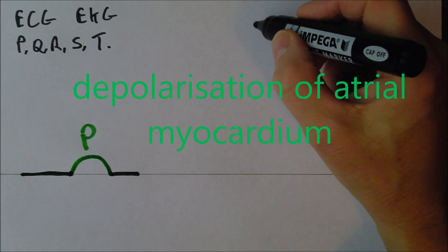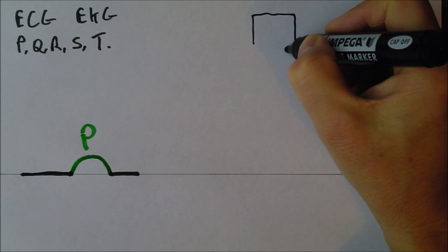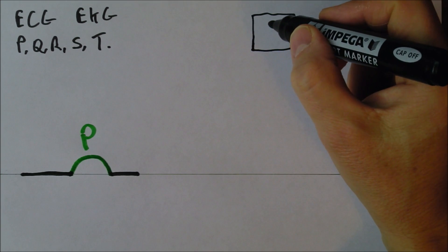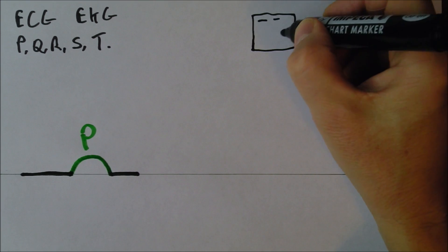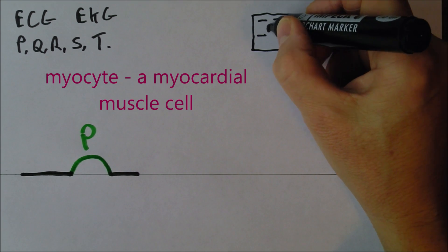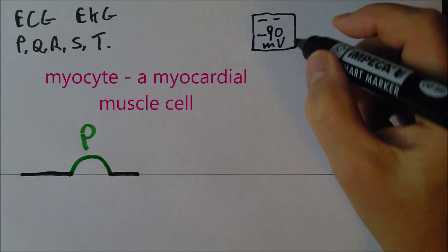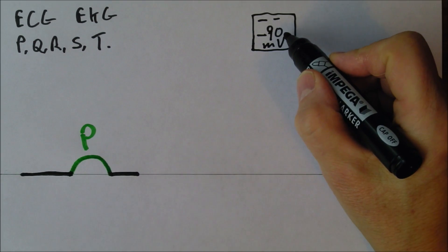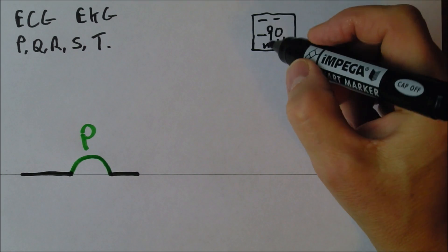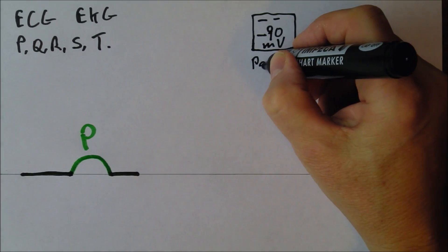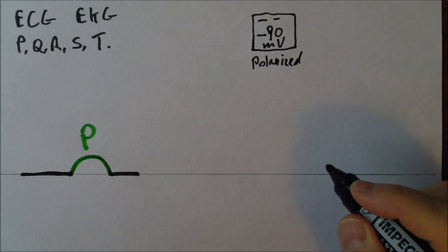So in the myocardium there's lots of individual cardiac cells, lots of individual myocytes. And at rest these are going to be negative inside. About 90 millivolts negativity. So there's more negative ions inside the cell than outside the cell. And when it's at rest like that we'll say that that is polarised.